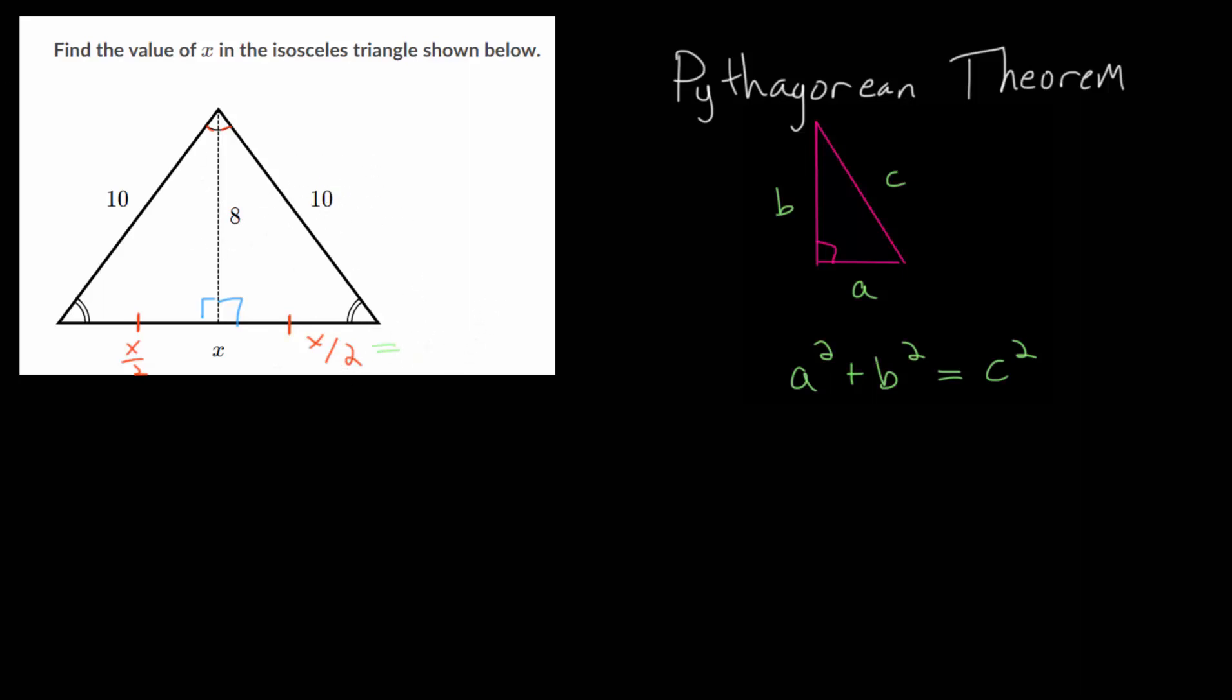We can call this maybe a or b, it doesn't matter, but the other one will be the opposite letter. So if this is a, then this is b, and the hypotenuse has to be c. We can say that x over 2 squared, that's a squared, plus b squared or 8 squared is equal to 10 squared.